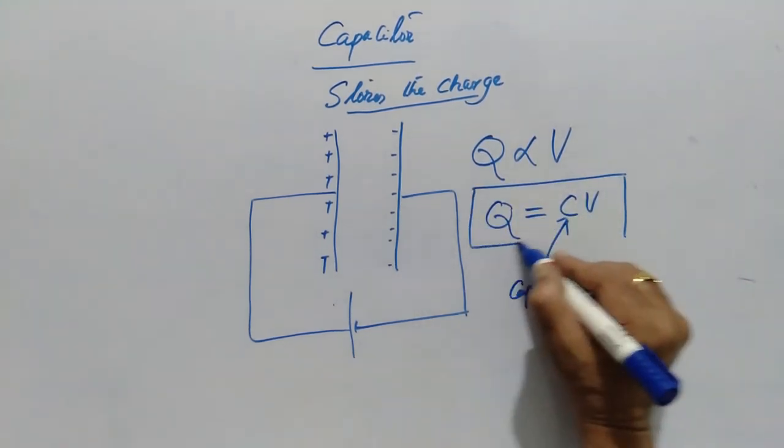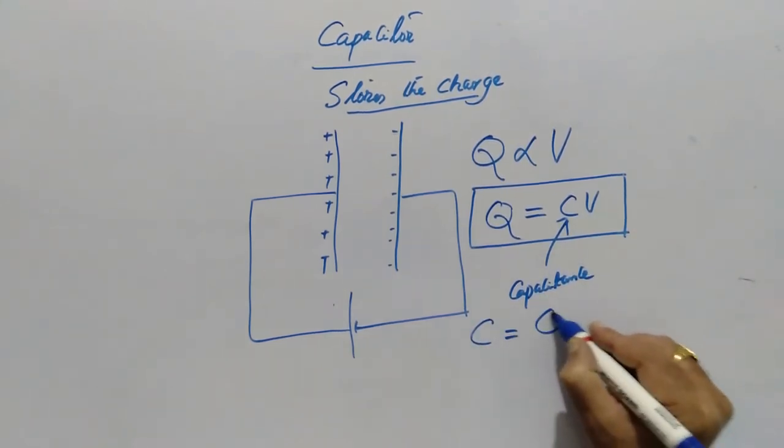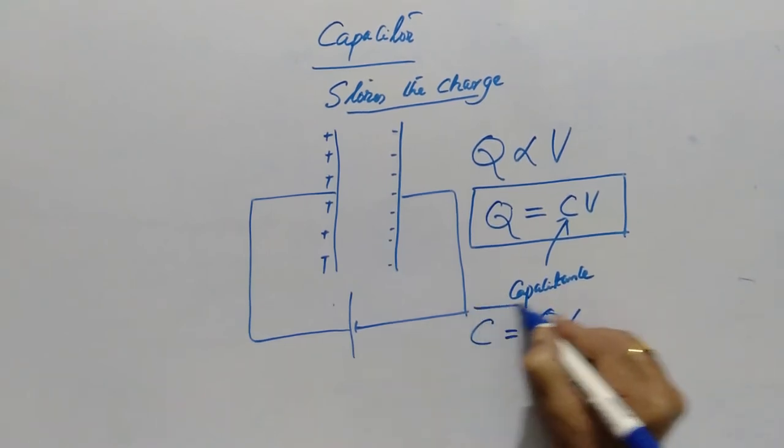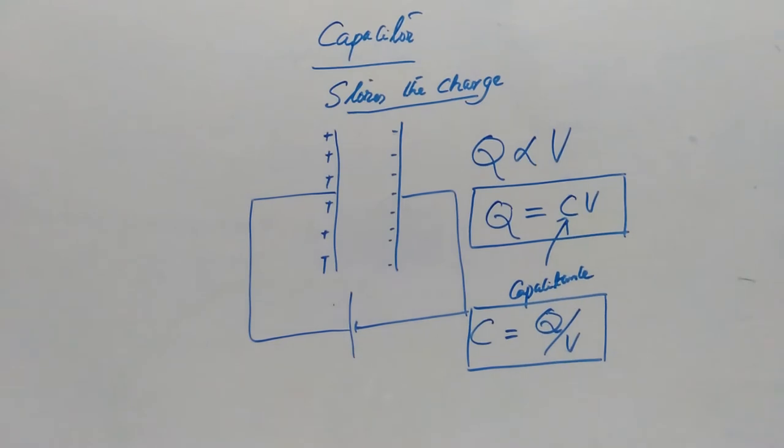Q is equal to CV is the pivot equation for the capacitors. The capacitance C is equal to Q by V.